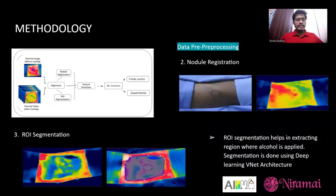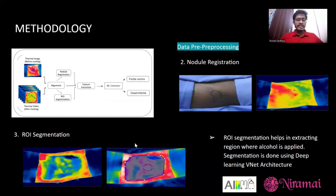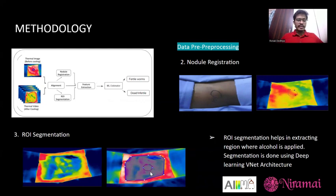The second pre-processing step is nodule registration. As described in the acquisition protocol, we mark the nodule region with a marker, and we perform digital registration of this. You can see a digital registration mark for the nodule location. The third step is ROI segmentation. Since we are not interested in regions outside the alcohol-applied area, which may include clothing or other elements, we segment the alcohol-applied region using a deep net architecture — a V-Net — trained for this purpose, obtaining the region of interest corresponding to the alcohol-applied region.